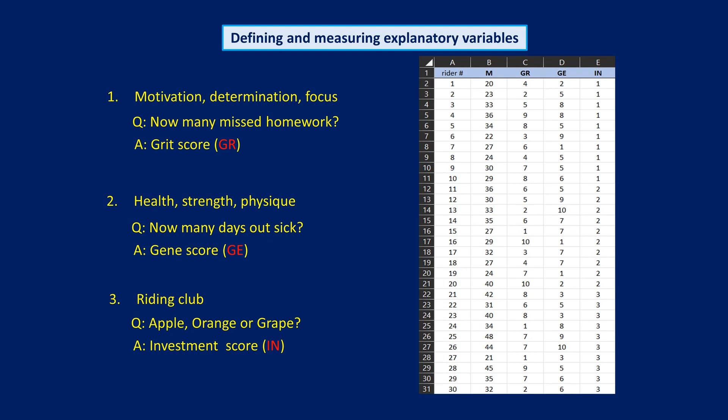In this class, we'll investigate whether increasing values of m in our database tend to be associated with increasing values of gr, ge, or in. In statistics, the word correlation describes this kind of association.